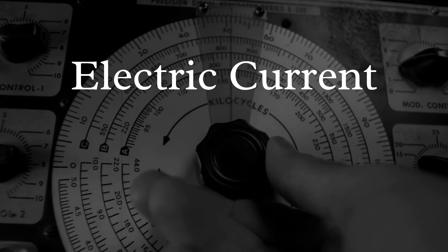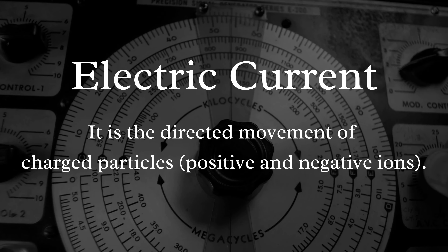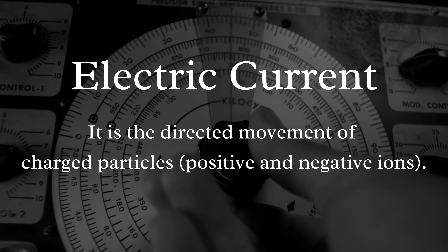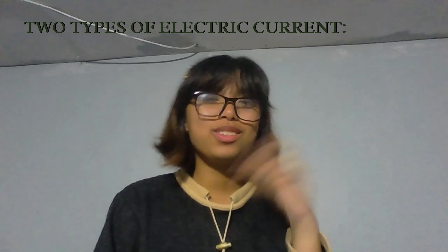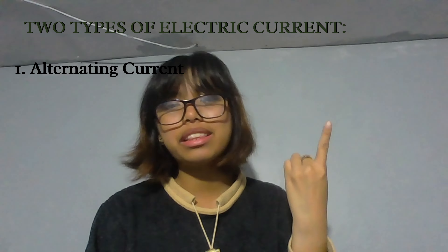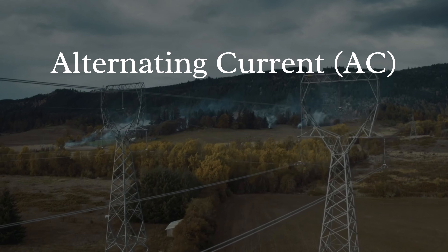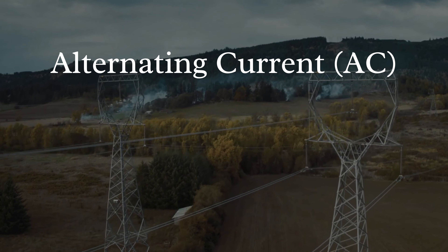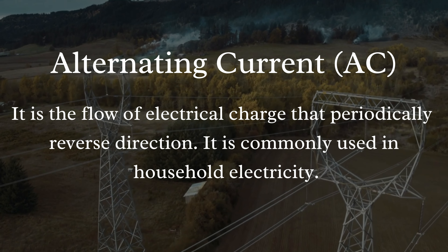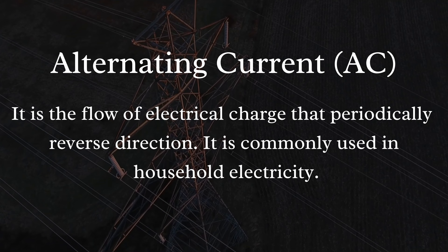Electric current is the directed movement of charged particles, namely positive and negative ions. There are two types of electric current: alternating current and direct current. Alternating current, or AC, is a type of electrical current — a flow of electrical charge that periodically reverses direction.